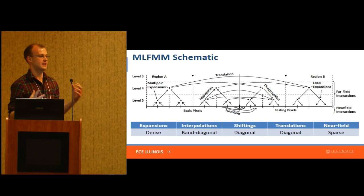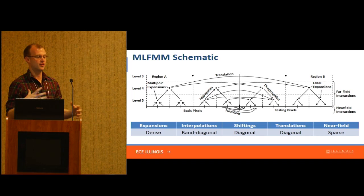There are a variety of different phases: a set of kernels that aggregate pixel information, a set that shifts pixel information over long ranges, a set that redistributes information down the tree, and a set that does near-field interactions. We've got six, seven, or eight kernels in total, and they're all matrix operations — some dense, some sparse, some with particular features — so they're relatively straightforward to write on the GPU.